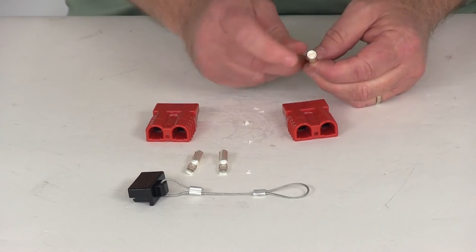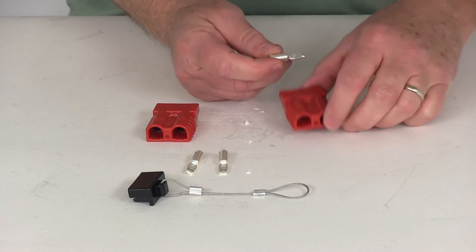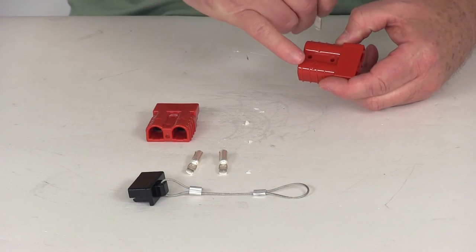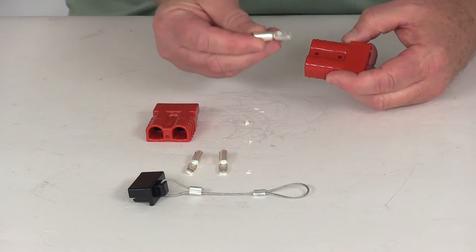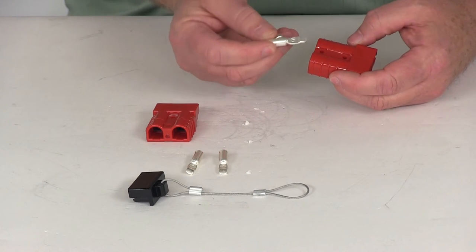You'll take two terminals, put your positive and negative, one to each terminal. On your connector you'll see there's a positive and negative. Make sure you put your power wire terminal in the correct one.